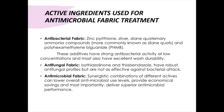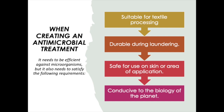Active ingredients used for antimicrobial fabric treatment: for antibacterial fabric we have zinc pyrithione, silver, selenium, quaternary ammonia compounds and polyhexamethylene biguanide. For antifungal fabric we have isothiazolinone and carbendazole. For antimicrobial fabric we have synergistic combinations of different actives. When creating an antimicrobial treatment we need to be sure that it's suitable for textile processing, durable during laundering, safe for use on skin or area of application, and also conducive to the biology of the planet.